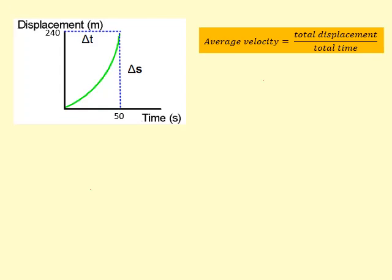One of the things we can do is use the average velocity, which is the total distance traveled over that period of time divided by the time it takes. For example, in this case the person has traveled 240 meters, divide that by 50 seconds, so he was moving at 4.8 meters per second on average.